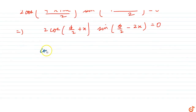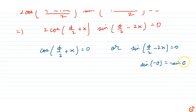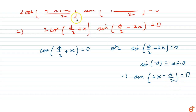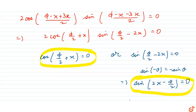This equation holds if cos(φ/2 + x) = 0 or sin(φ/2 - 2x) = 0, which is equivalent to cos(φ/2 + x) = 0 or sin(2x - φ/2) = 0. These give us two possible solution cases. Looking at the options, options A and C are the two correct options.